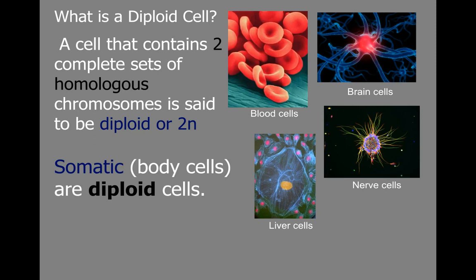So what's a diploid cell? A diploid cell is a cell that has the complete set of DNA — two complete sets of homologous pairs. It's diploid, it is 2N. These are our cells that contain 46 chromosomes. All of our somatic cells or body cells are going to be considered diploid cells. These are cells that make up your body, not cells that are going to go on to make up other bodies — those are your sex cells, sperm cells and egg cells, and they are not diploid. Diploid cells have 46 chromosomes, represented as 2N.